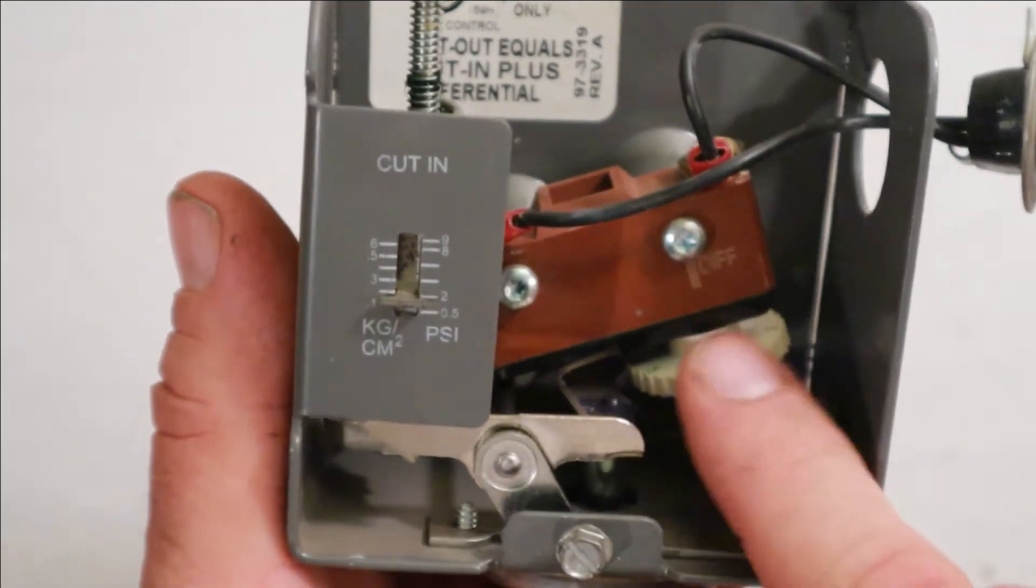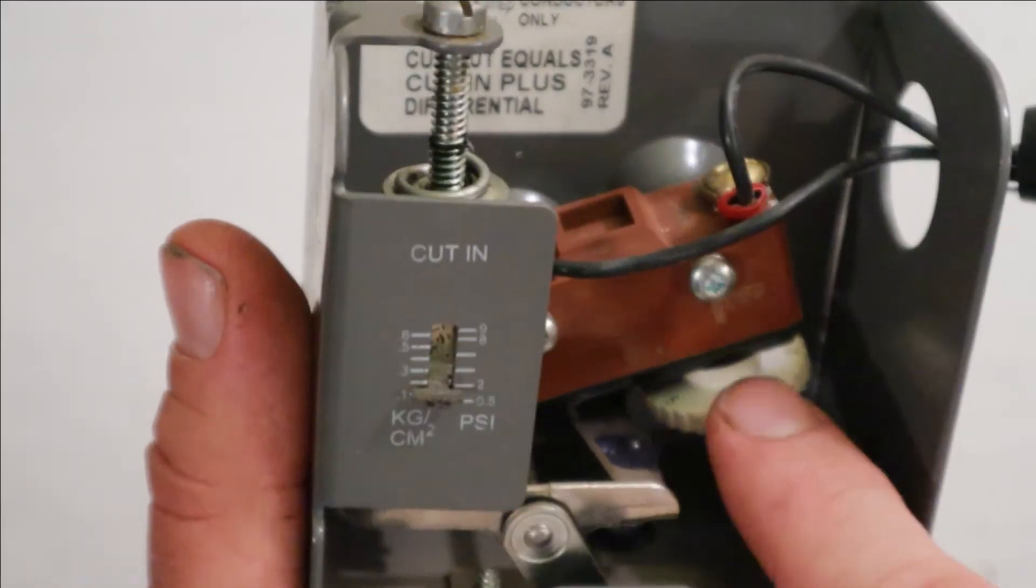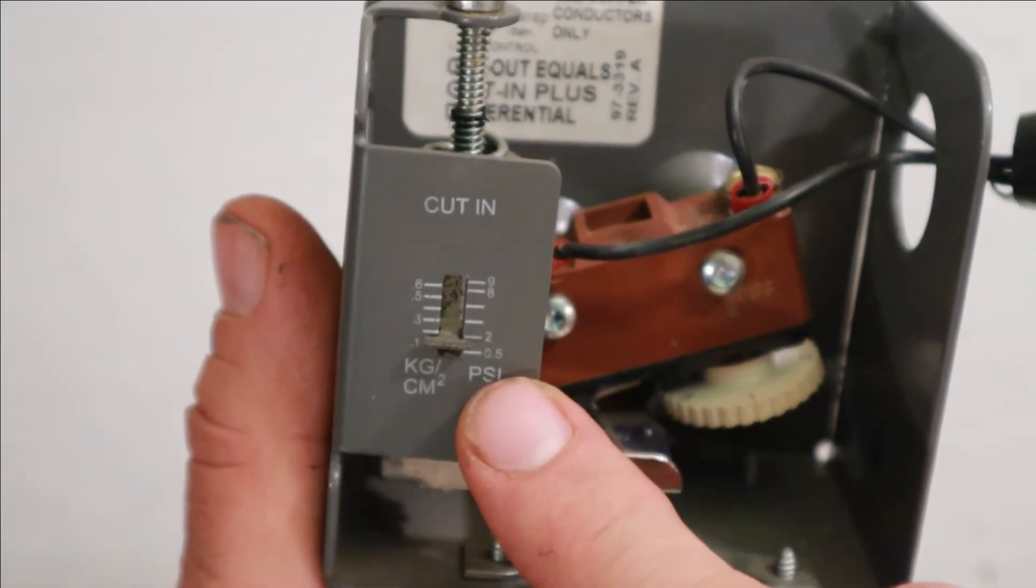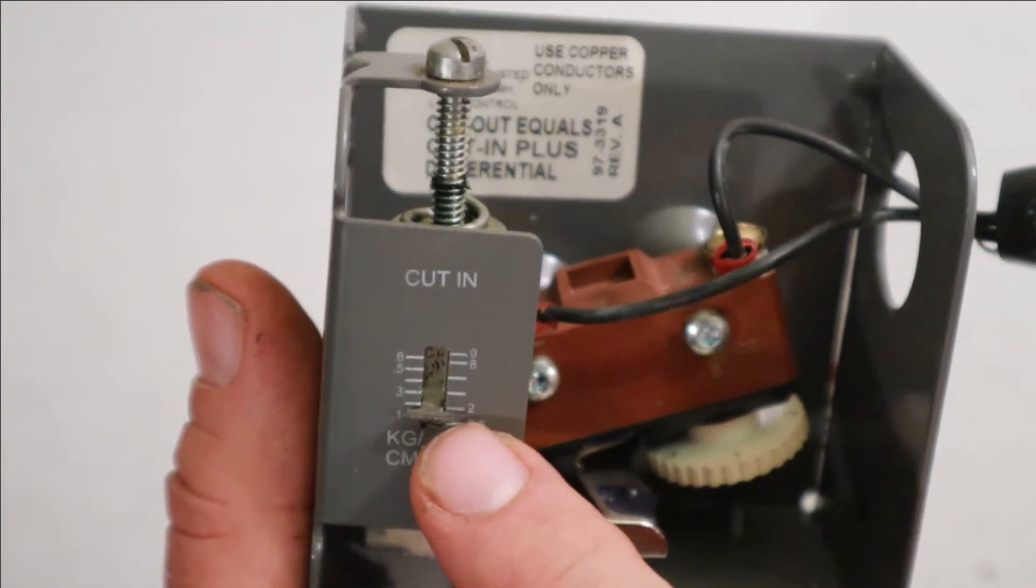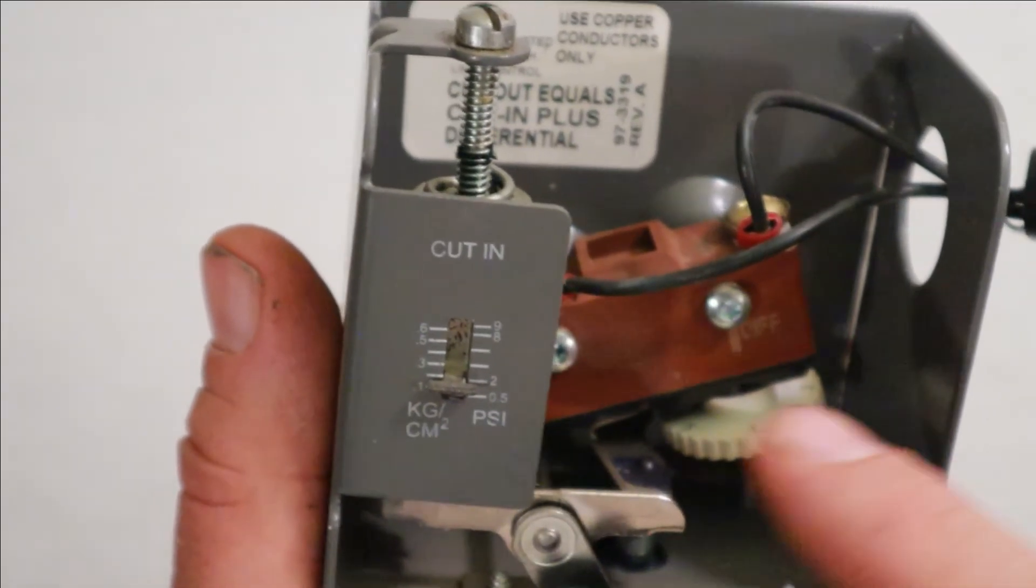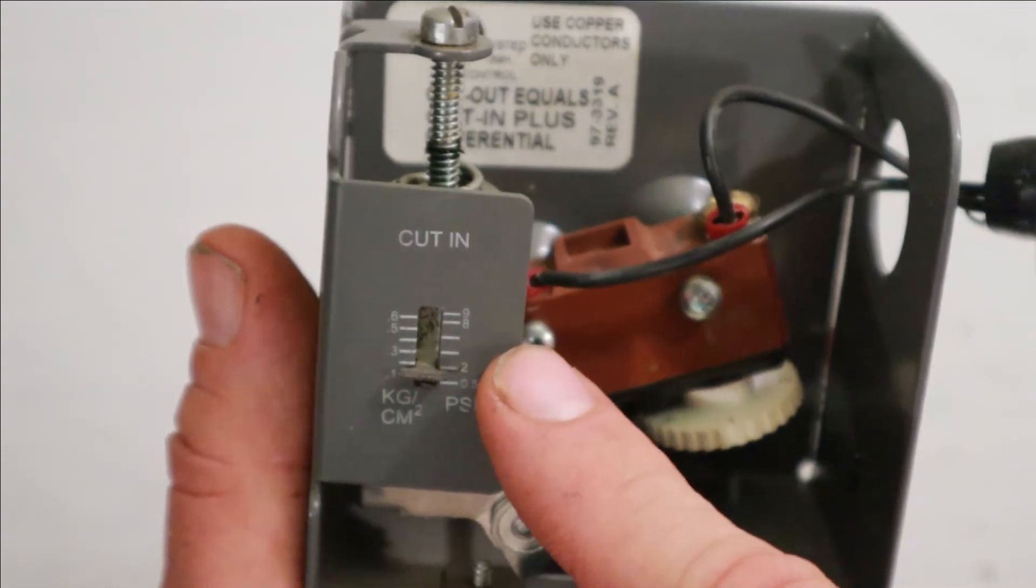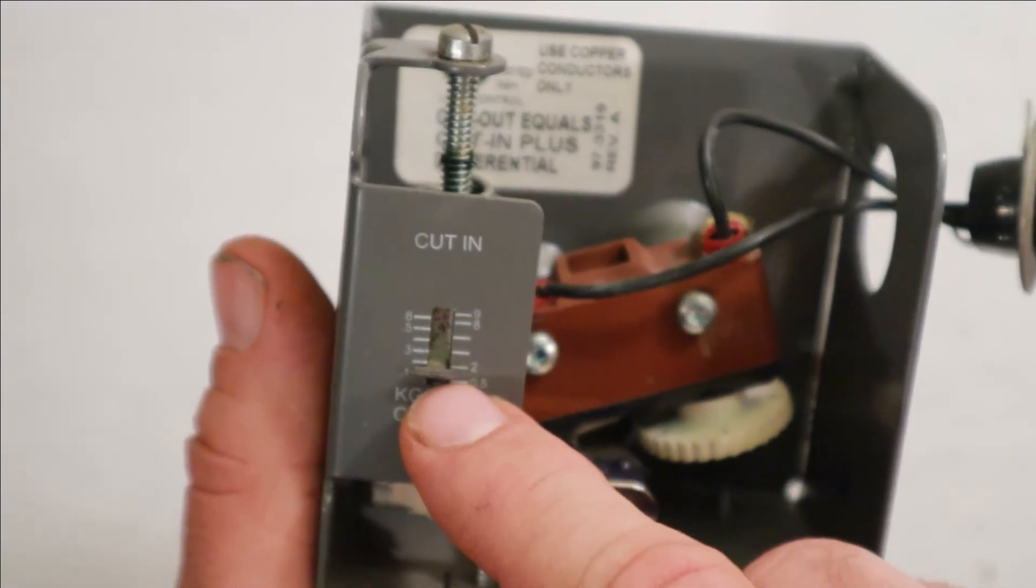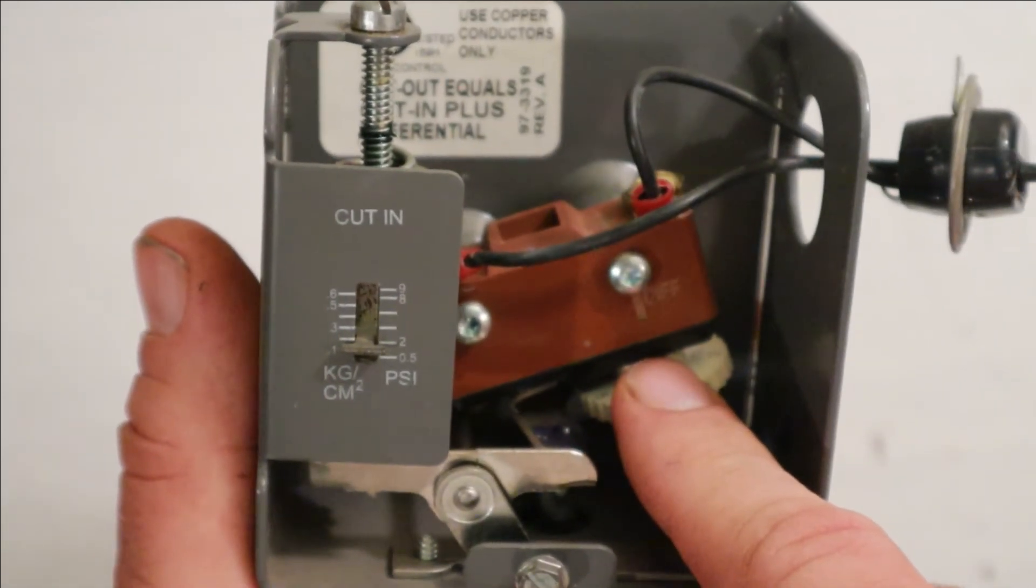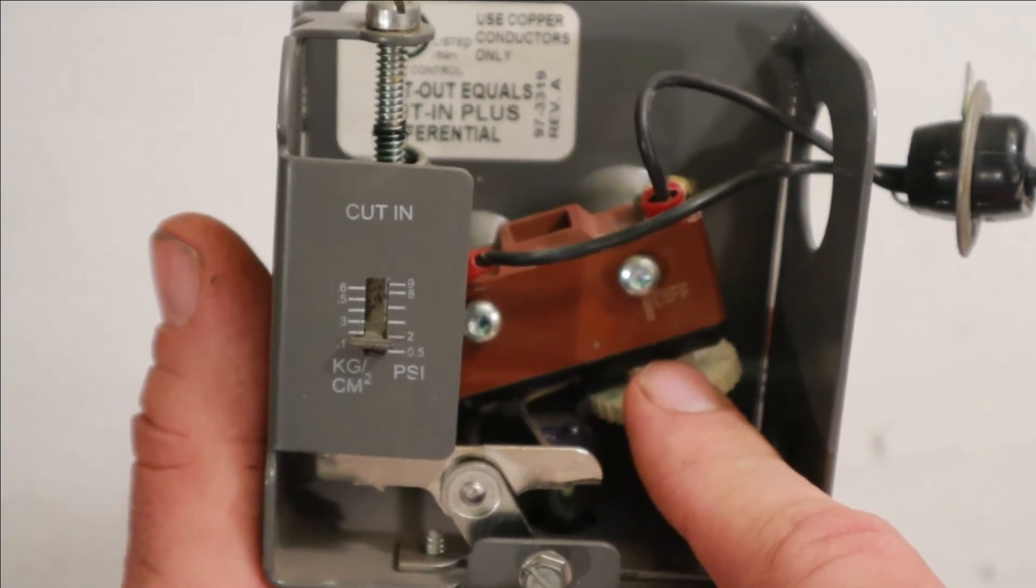Now what this is, is this is your cutout pressure, but it's not exactly what the number is. It's this plus your cut in pressure. So if this is set to one, your cut in pressure is set to one. You add those two together and your cutoff pressure is going to be two pounds. If you have a half a pound on this and your differential is set to one, your cutout pressure will be one and a half pounds.